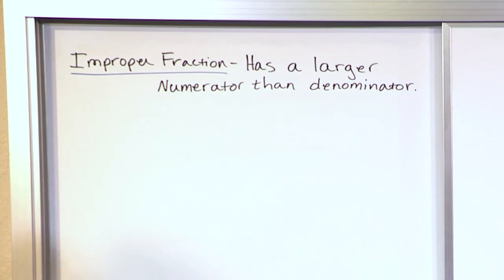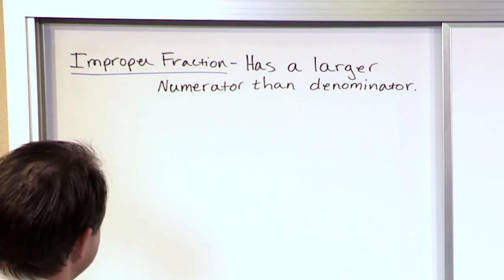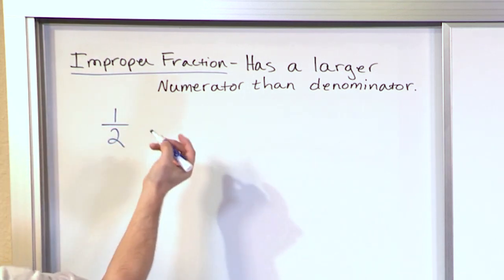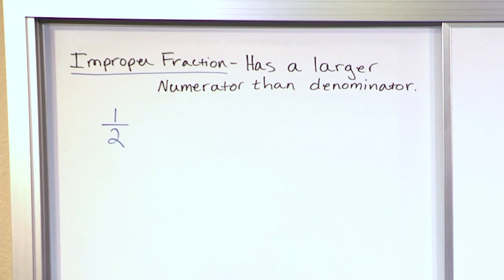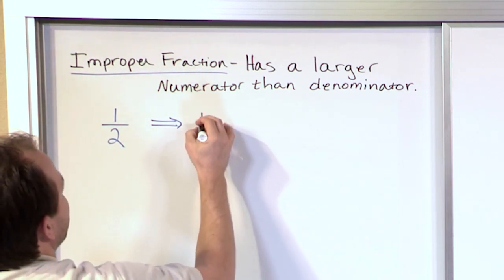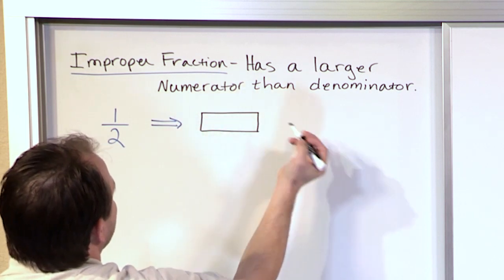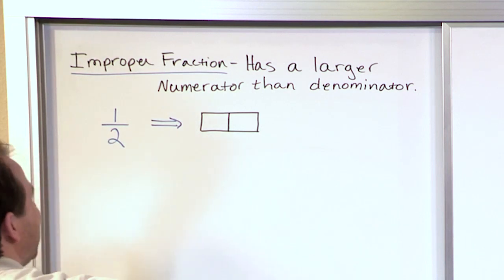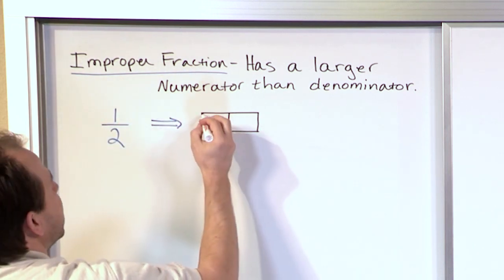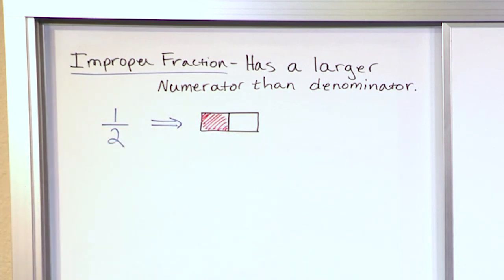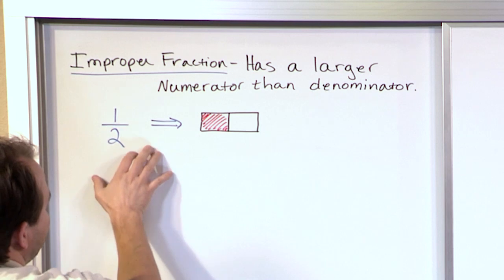Let's take an example of something that's not improper, just to get started — a regular old fraction. This is not an improper fraction. This is one-half, and we've done this enough times. To quickly review: you take a candy bar, cut it into two pieces because that's the bottom number, and then you only have one of the pieces. We've given away one half of the candy bar. This is a regular fraction.